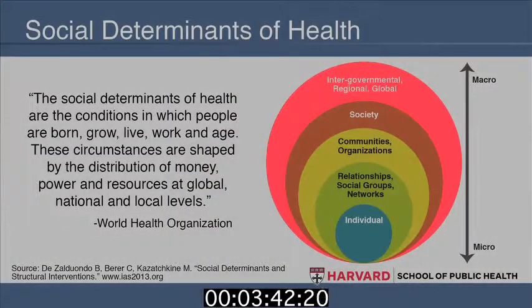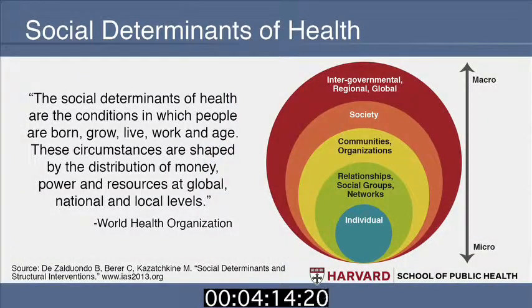And then of course there are intergovernmental, regional, and global determinants of health. For example, phenomena like climate change have a significant impact on human health, and the ability to influence that is only marginally in the hands of any national government or society itself. All of these pieces come together — as you see the line on the right, it goes from the micro, you and me, up to the macro. All of those are part of determining how healthy or unhealthy we are.